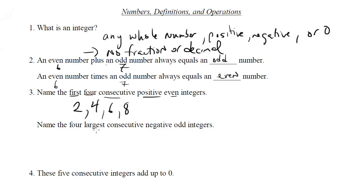How about this one? Name the 4 largest consecutive negative odd integers. So you might get confused and say, well largest, now wait a minute, it can go infinitely large. Well wait a minute, you've got to be careful with negatives, right? Negatives get larger as they get closer to 0.